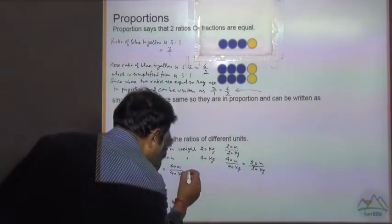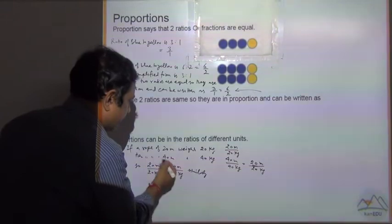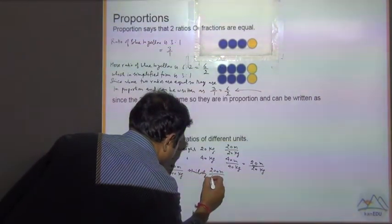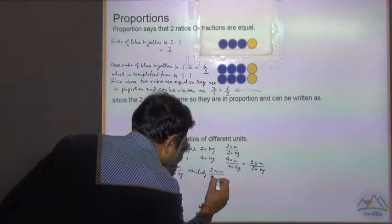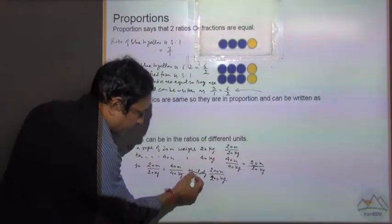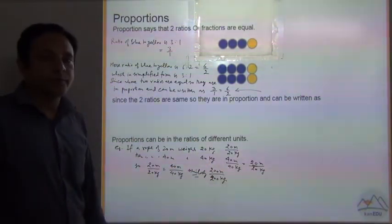Similarly, we can also write that 200 meter divided by 200 kg - this is also equal. These all ratios are in proportion.